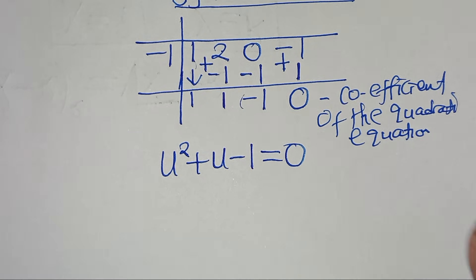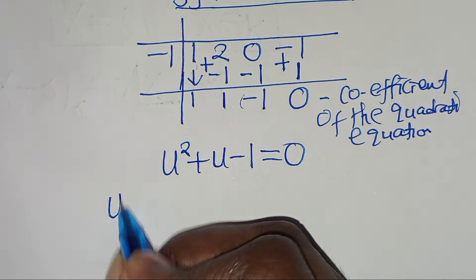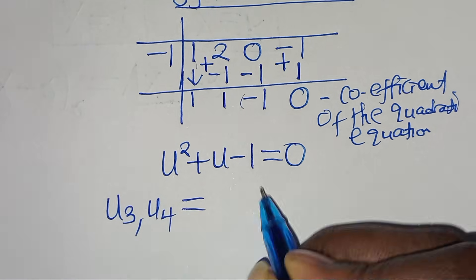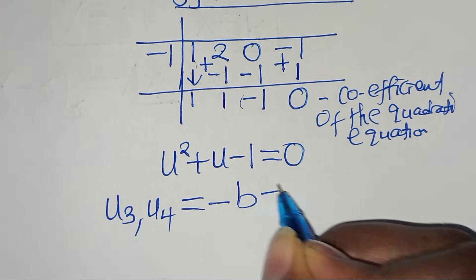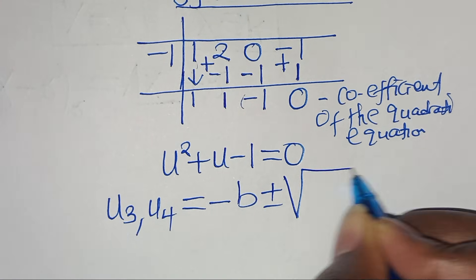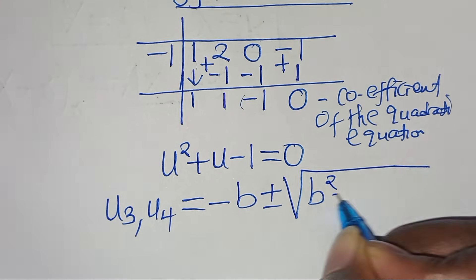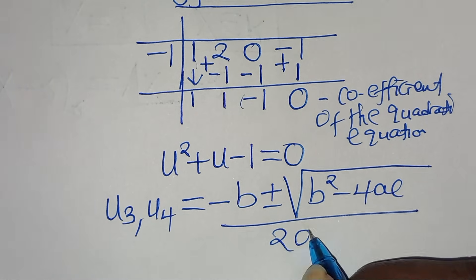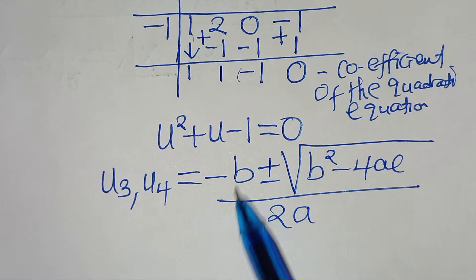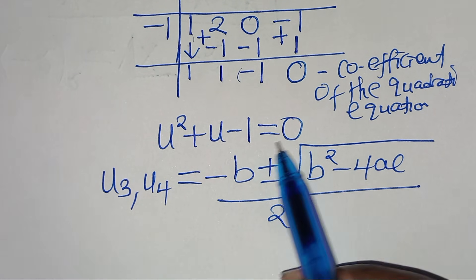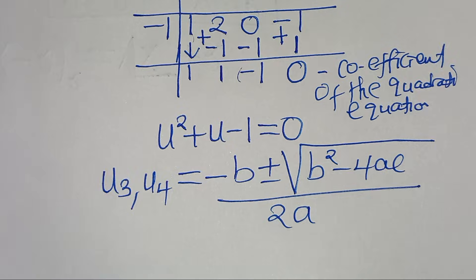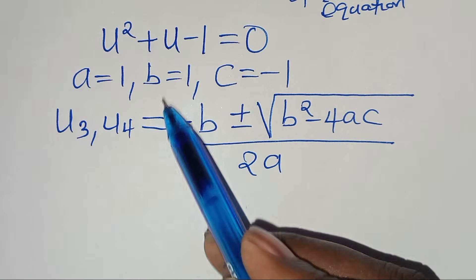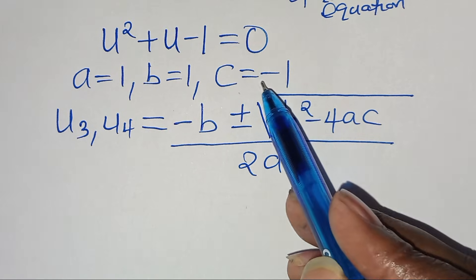So we can solve for u₃ and u₄ by applying the quadratic formula: minus b plus or minus the square root of (b squared minus 4ac), all divided by 2a. From the quadratic equation u² + u - 1 = 0, we have a equal to 1, b equal to 1, and c equal to minus 1.